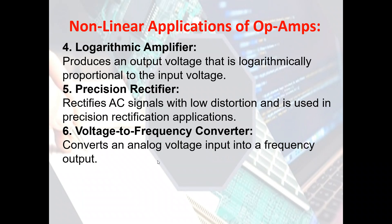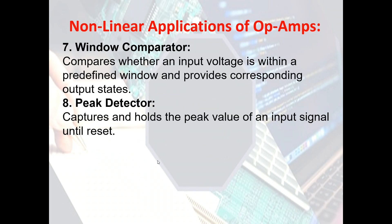Other non-linear applications include the logarithmic amplifier, which produces an output voltage that is logarithmically proportional to the input voltage. The precision rectifier rectifies AC signals with low distortion and is used in precision rectification applications. The voltage-to-frequency converter converts an analog voltage input into a frequency output. The window comparator checks whether an input voltage is within a predefined window and provides corresponding output states, while the peak detector captures and holds the peak value of an input signal until reset.